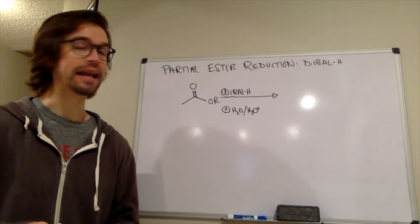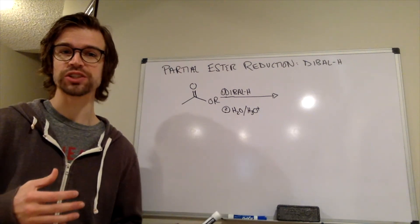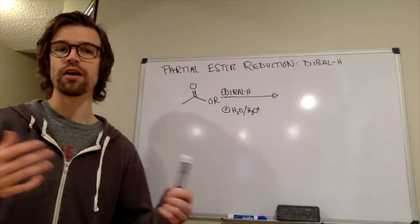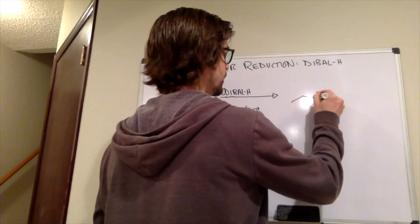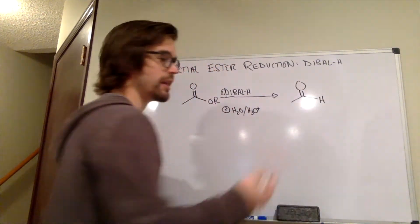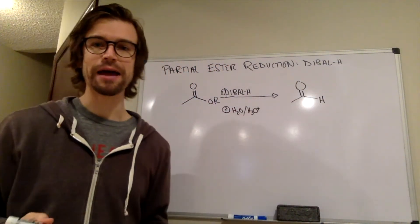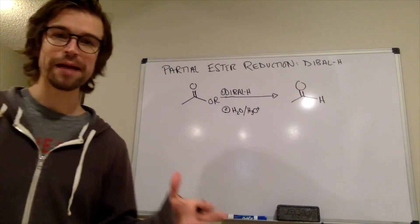It's called dibal-H. If a full ester reduction made the alcohol, a partial ester reduction would end with the aldehyde. So this hydride came from dibal-H. So what is dibal-H?